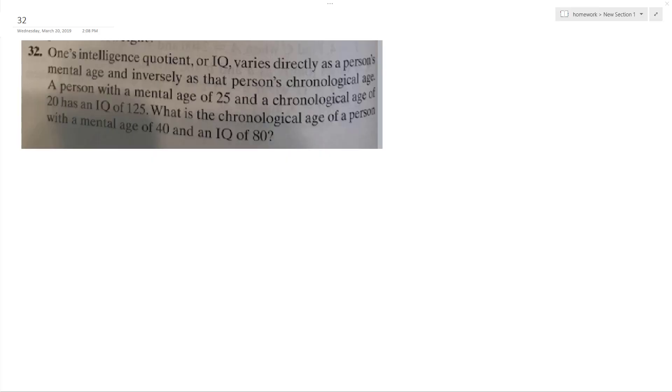One's intelligent quotient or IQ varies directly as a person's mental age and inversely as that person's chronological age. What's going to happen here is we've got one solution and we're going to use that to find our K constant.